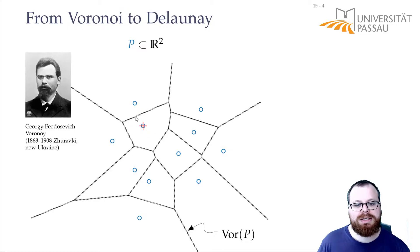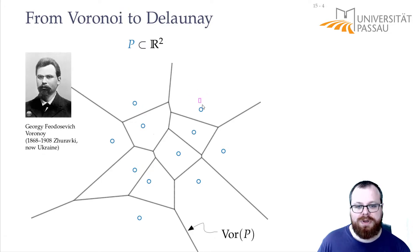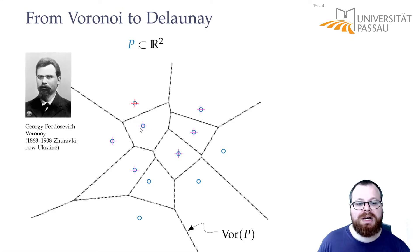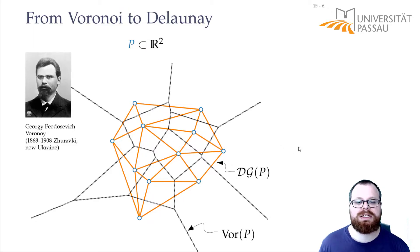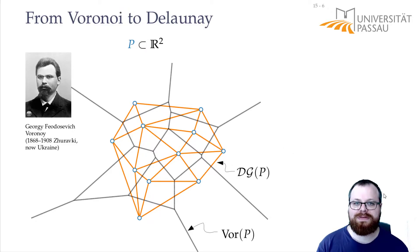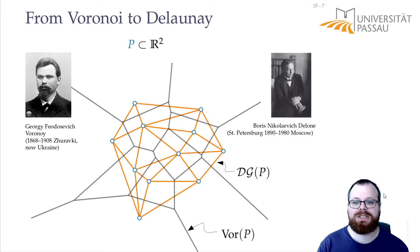For example, looking at this cell here, this is the corresponding point, and it shares an edge with this cell, this cell, this one, this one, this one, and this one. So we must have an edge between this vertex and all these marked vertices here.